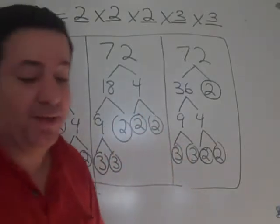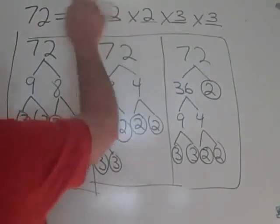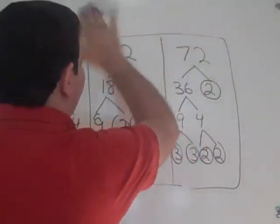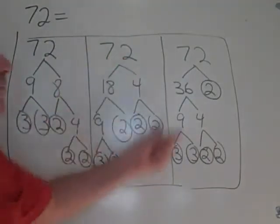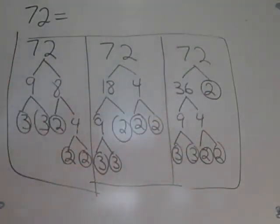Now, I want to make a comment. A lot of students mistakenly, to find the prime factorization of 72, they just do a factor tree. One of these, or something else.